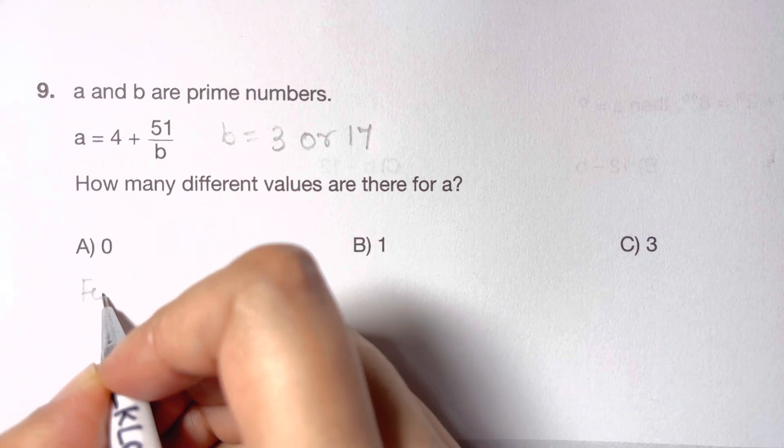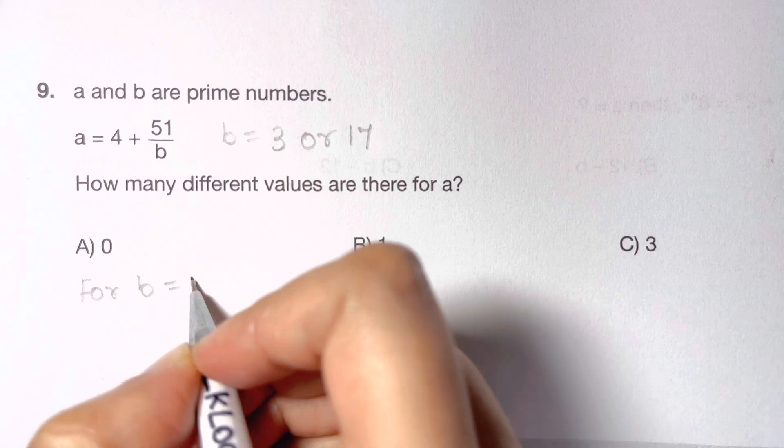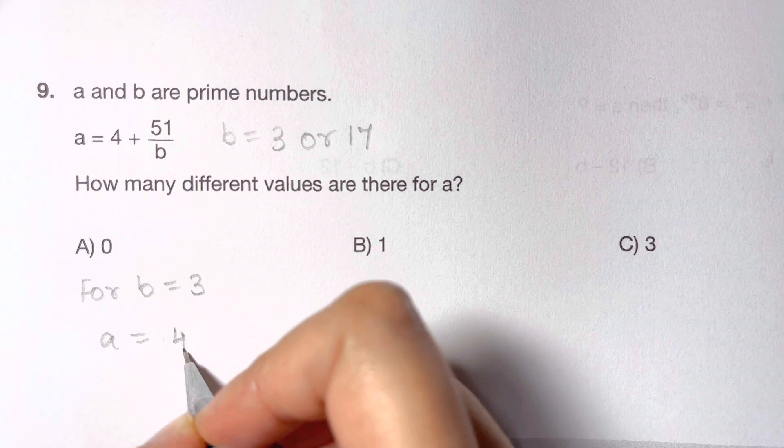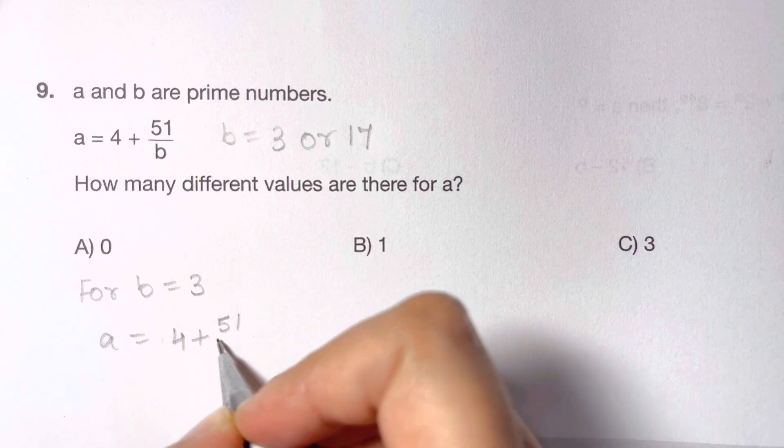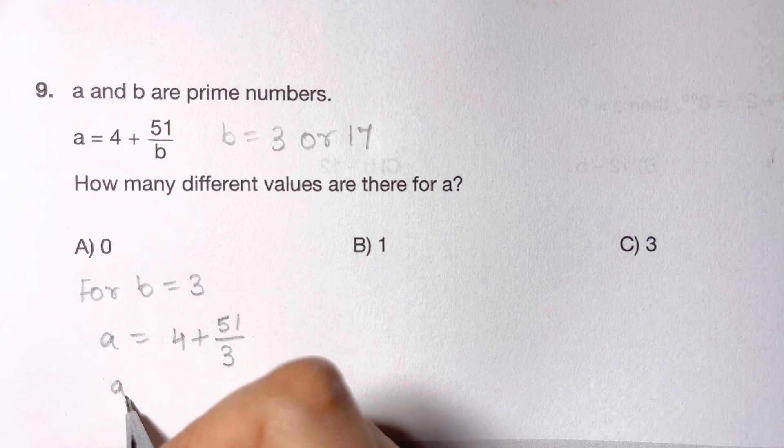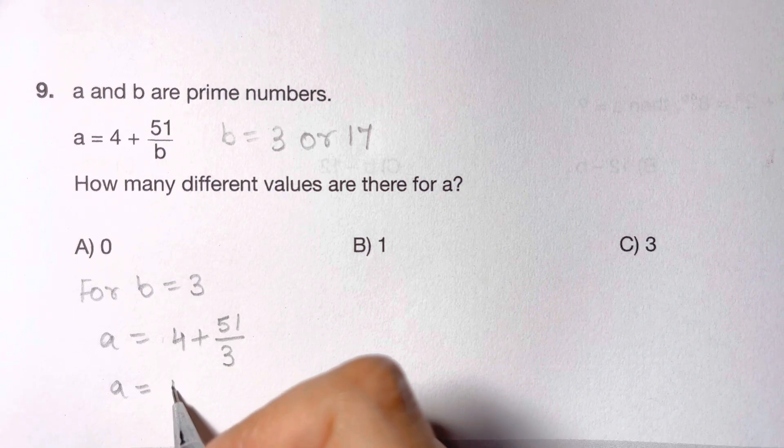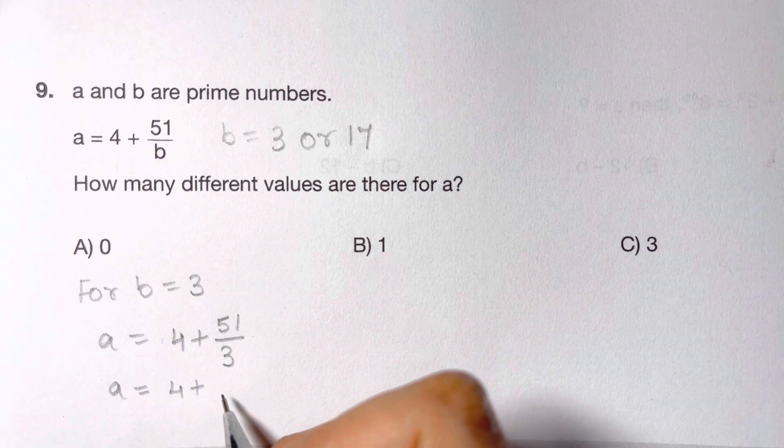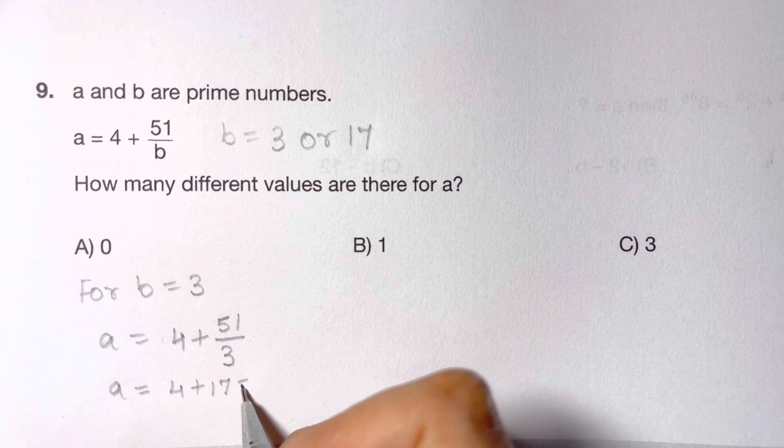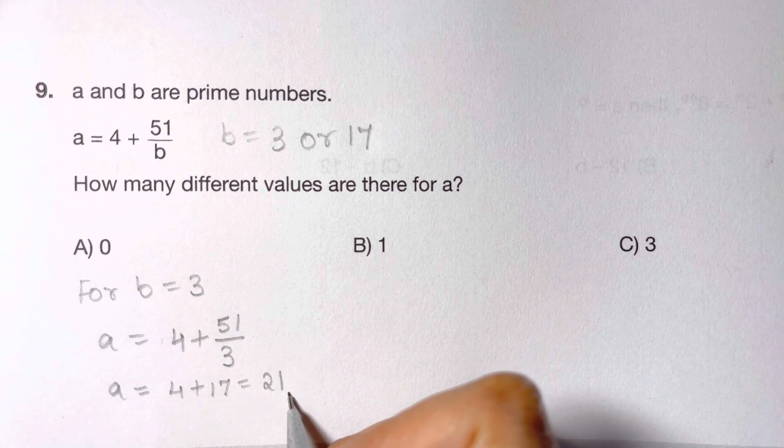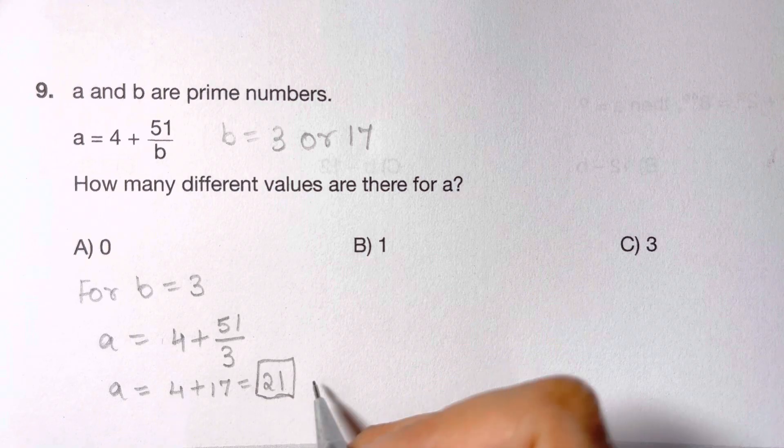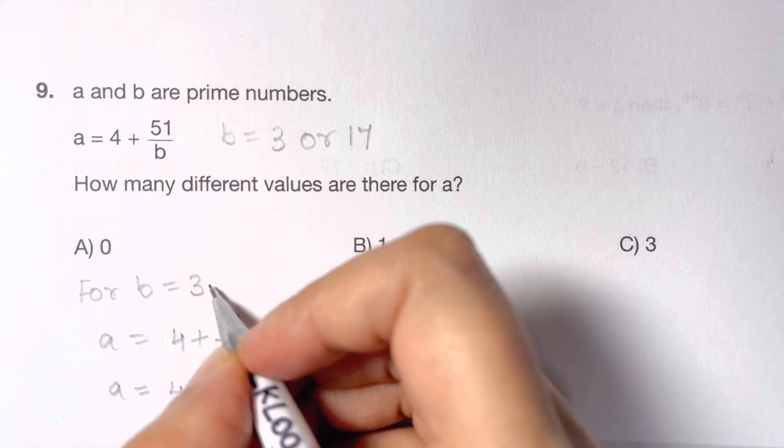For B equals 3, A equals 4 plus 51 over 3. So that equals 4 plus 17, and that equals 21. But 21 is not a prime number, so A cannot be equal to 21. That's wrong.